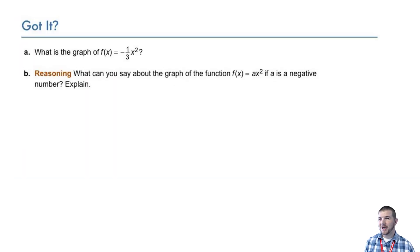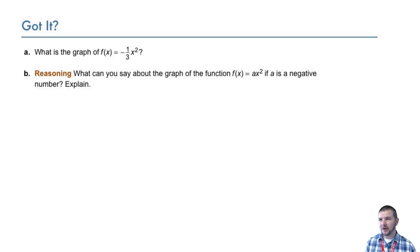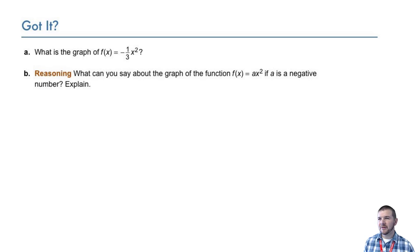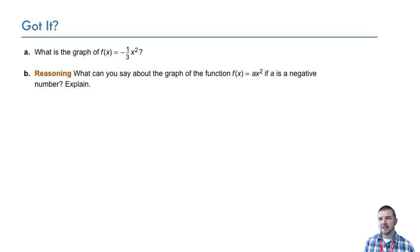Your turn. Part A: What is the graph of f of x equals negative 1 third x squared? Part B, a reasoning item: What can you say about the graph of the function f of x equals ax squared if a is a negative number? Explain.